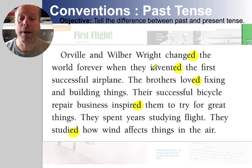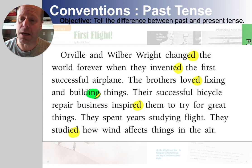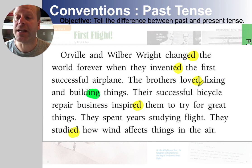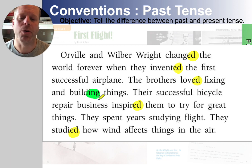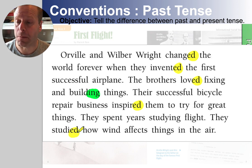Now you'll find in the paragraph there are also things that are happening in present tense. And that's very common in writing — you'll see some -ING words even in the past. You'll see them saying, 'I love fixing and building things.' Well, that 'loved' is showing that the present they're talking about came from a long time ago. So you will see tenses mixed in most paragraphs. But I would definitely say there are more past tense verbs in this story because it's from a long time ago.